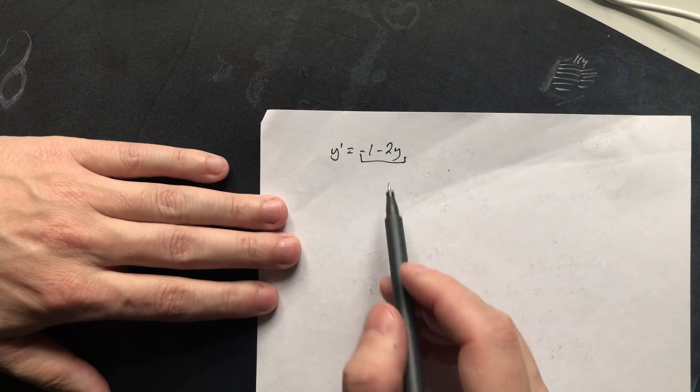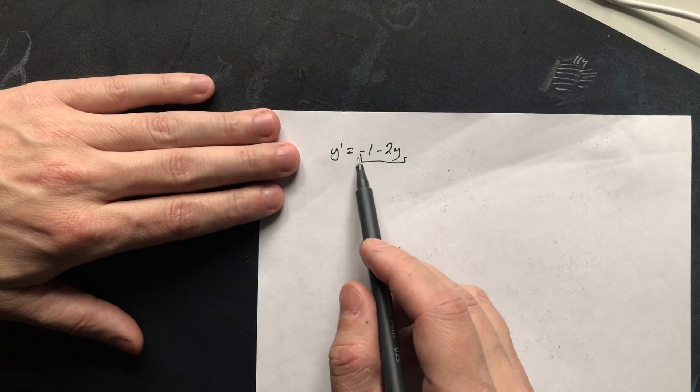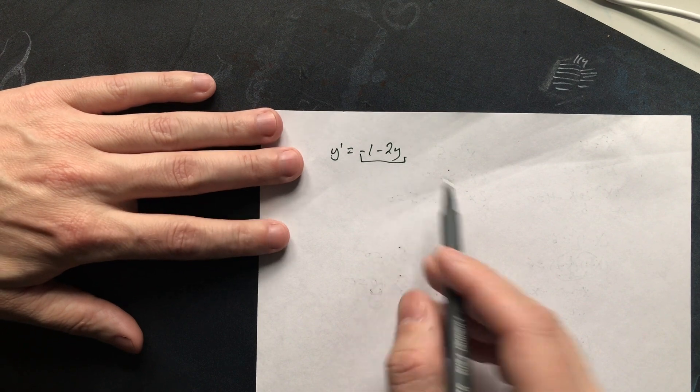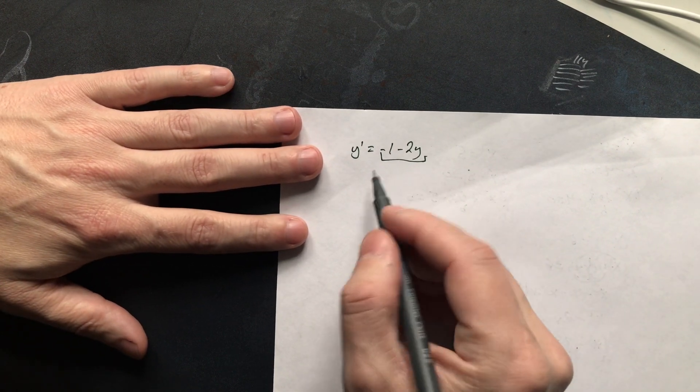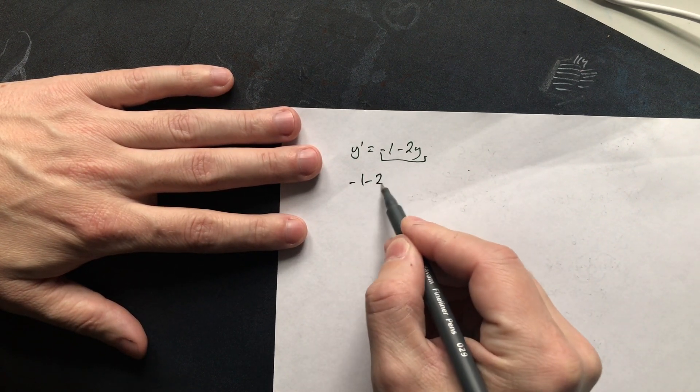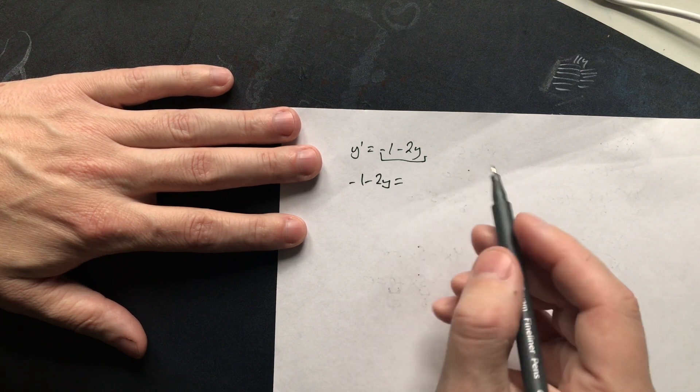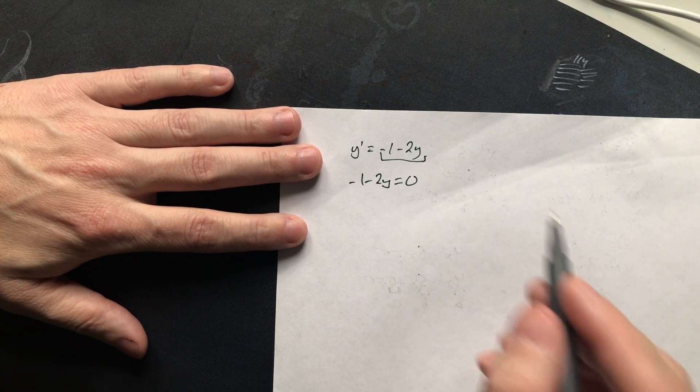Welcome friends. In this one, let's do the direction field for y prime equals negative 1 minus 2y. To keep the work organized, you can do negative 1 minus 2y and set it equal to a constant. For example, at first set it equal to 0.